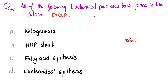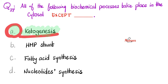Is it ketogenesis, HMP shunt, fatty acid synthesis, or nucleotide synthesis? Ketogenesis occurs in the mitochondria. HMP shunt takes place in the cytosol or cytoplasm. Fatty acid synthesis — also cytosol. Nucleotide synthesis — also cytosol. The only one that occurs in the mitochondria is ketogenesis, and that's the correct answer.